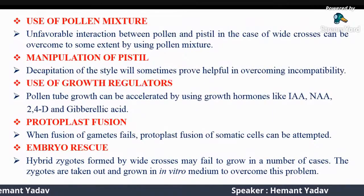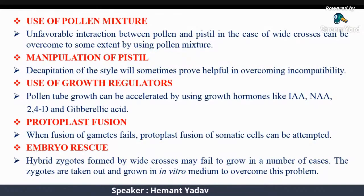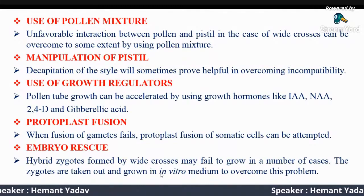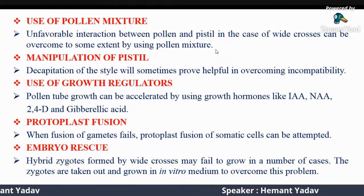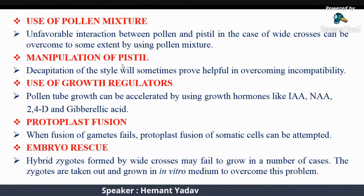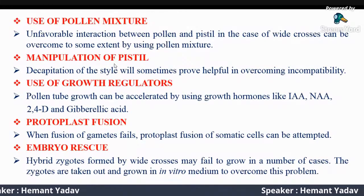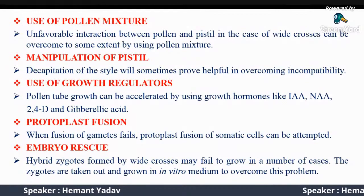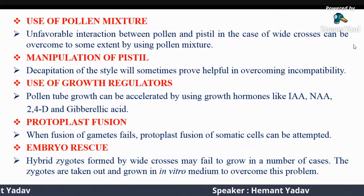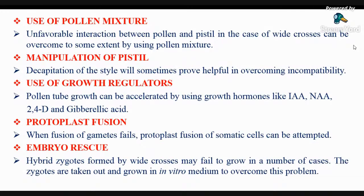Another technique is use of pollen mixture: unfavorable interaction between pollen and pistil in wide crosses can be overcome by mixing pollen from compatible and non-compatible parents together for pollination. Another technique is manipulation of pistil: decapitation of the style can sometimes prove helpful in overcoming incompatibility. Use of growth regulators like IAA, NAA, 2,4-D, and gibberellic acid is also a technique. Another technique is protoplast fusion: when fusion of gametes fails, protoplast fusion of somatic cells can be attempted. Embryo rescue is another technique, as discussed previously.